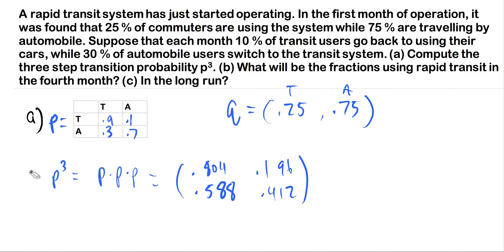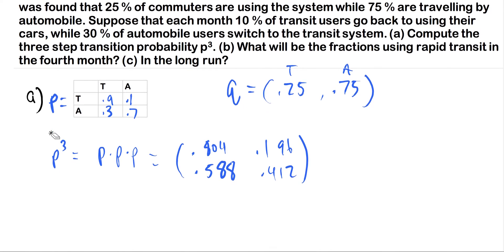What will be the fractions using the rapid transit system in the fourth month? So if we're thinking about the fourth month, that's three months away from the place we are now. So we've already been given the percentages that this start at. In the beginning, we said Q is going to be this starting vector, this initial state.